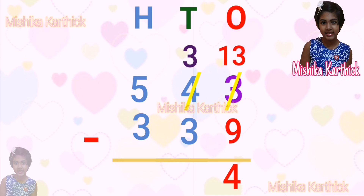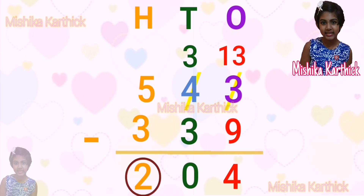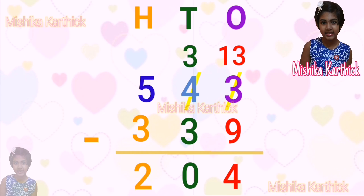Then, in tens: 3 minus 3 equals 0. Then, in hundreds: 5 minus 3 equals 2. Now we have 2 hundreds, 0 tens, 4 ones. So the number is 204. 543 minus 339 equals 204.